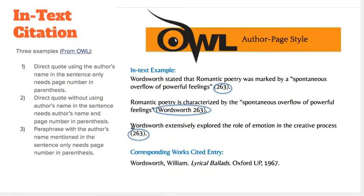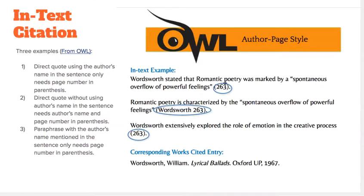For in-text citation, you can use a direct quote using the author's name in the sentence, and then you only need to list the page number in the parentheses. For example: Wordsworth stated that Romantic Poetry was marked by "a spontaneous overflow of powerful feelings" (263), and then a period.